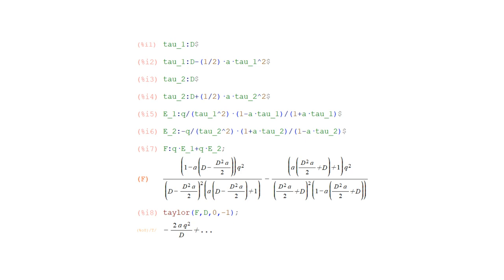Then calculate the fields E-one and E-two, and finally compute the net force F equals Q E-one plus Q E-two. This is a messy expression, but we can have the computer expand the expression for F in a so-called Taylor series in the variable D, about the value D equals zero and up to the minus one power of D. The result is minus two A Q squared over D, plus terms in higher powers of D.